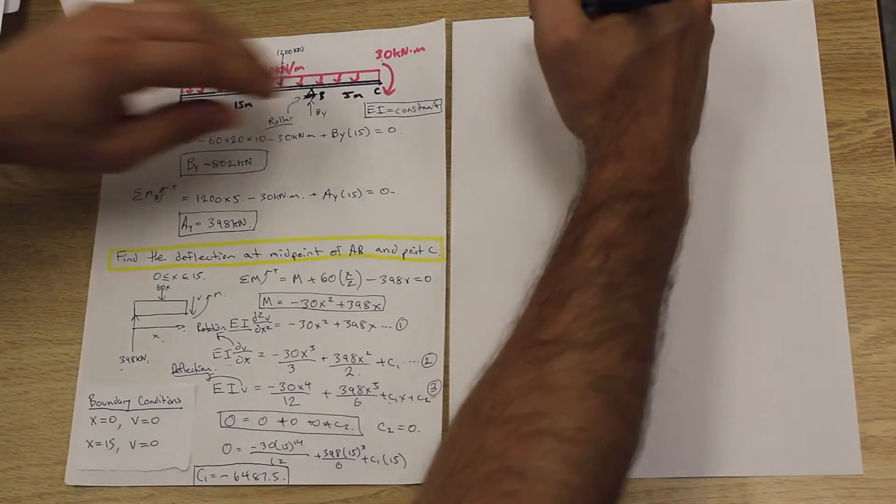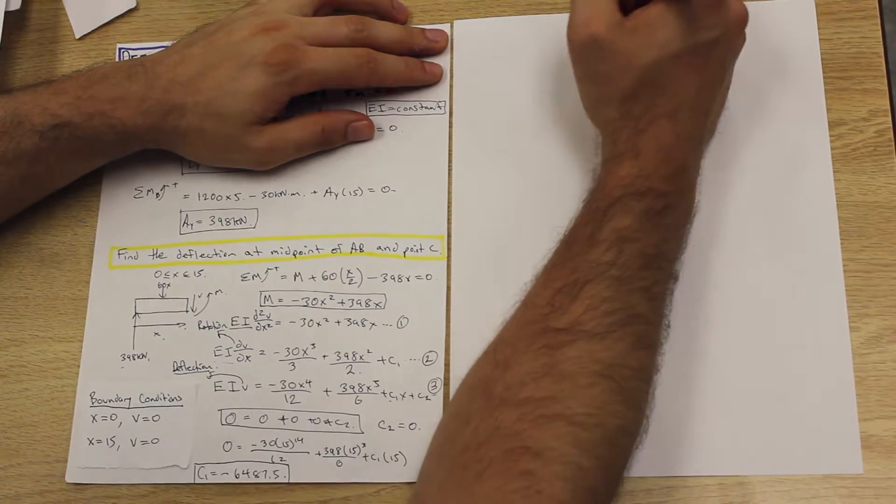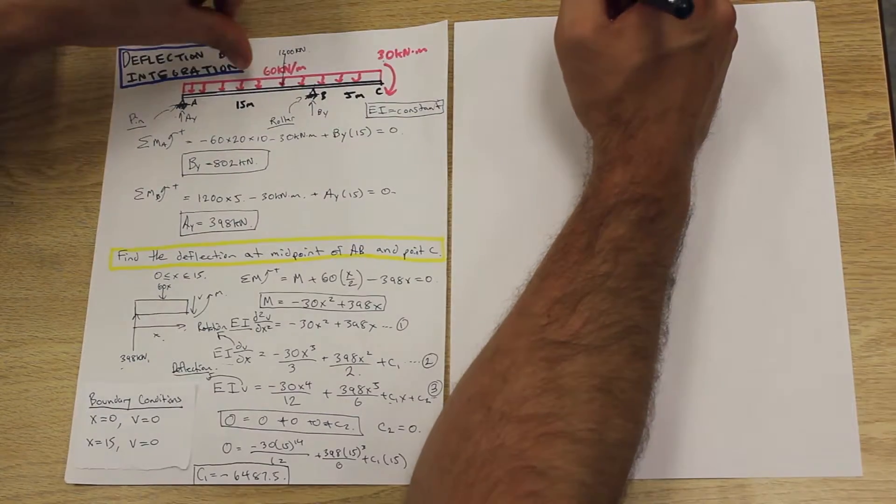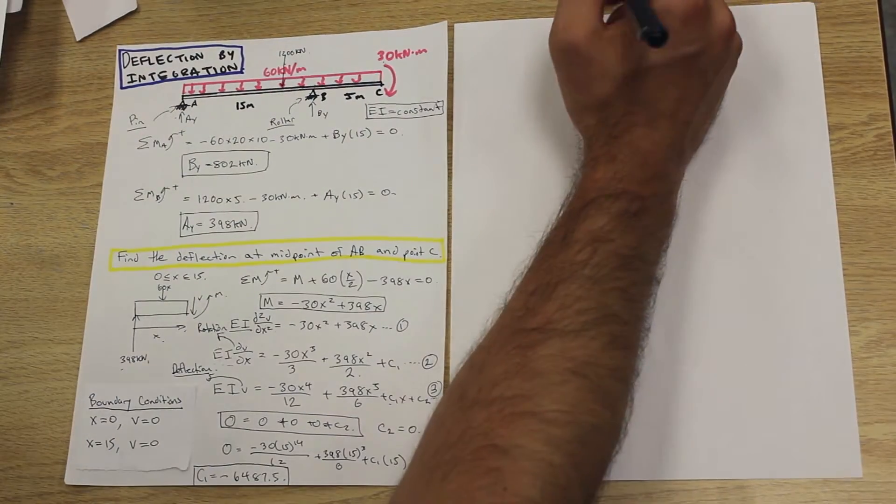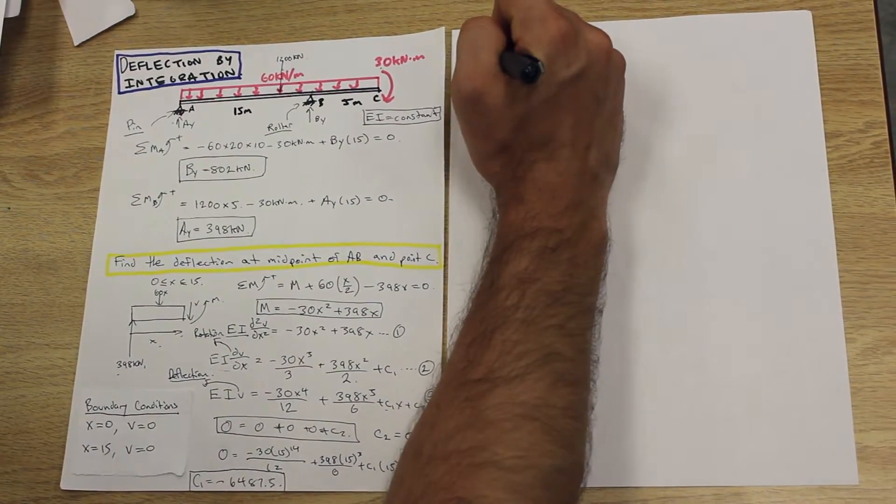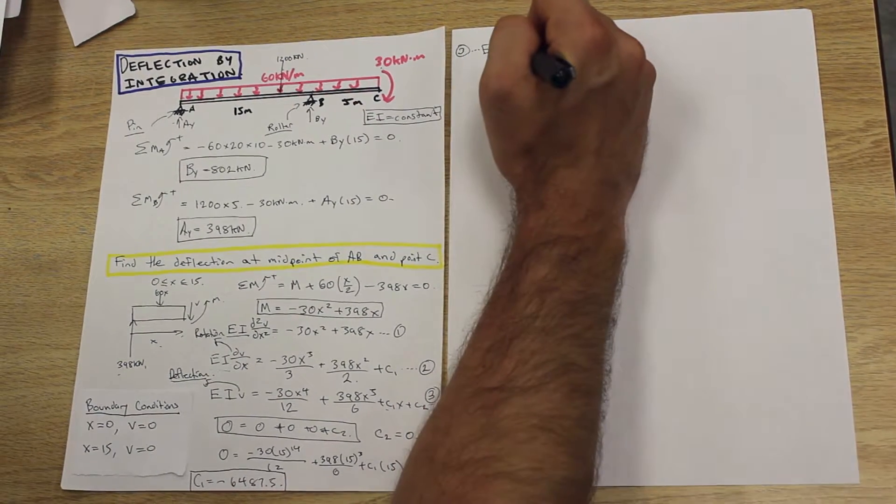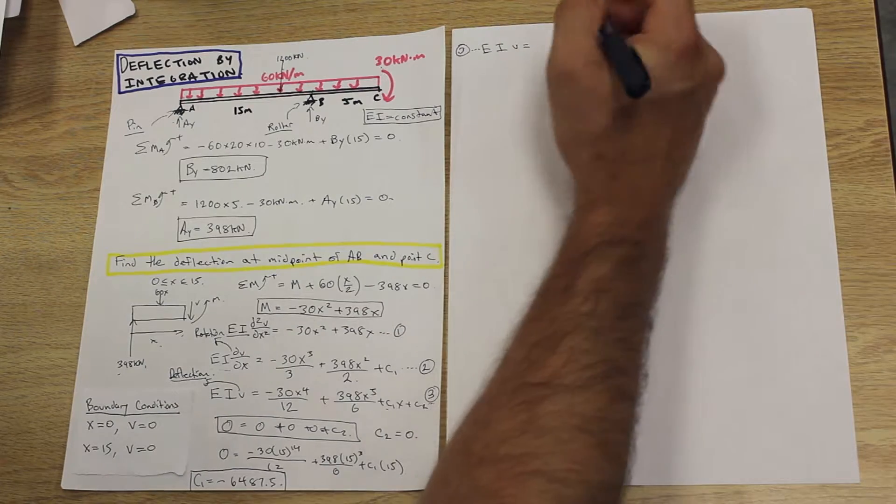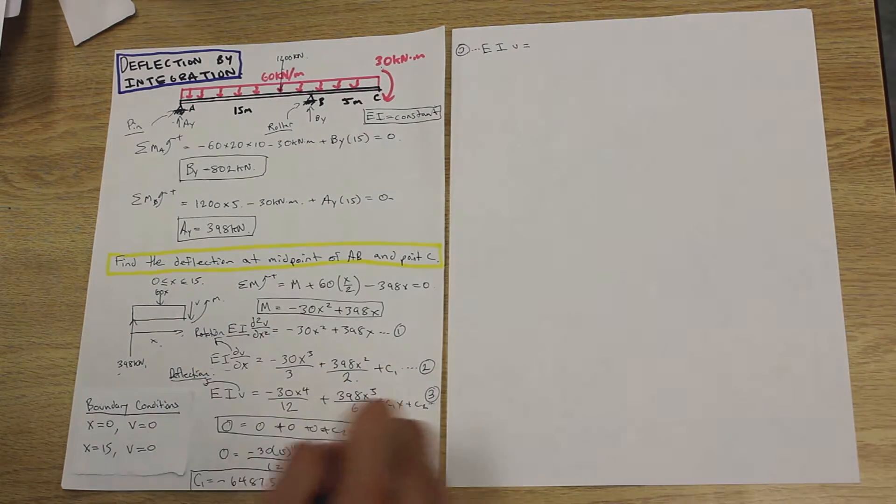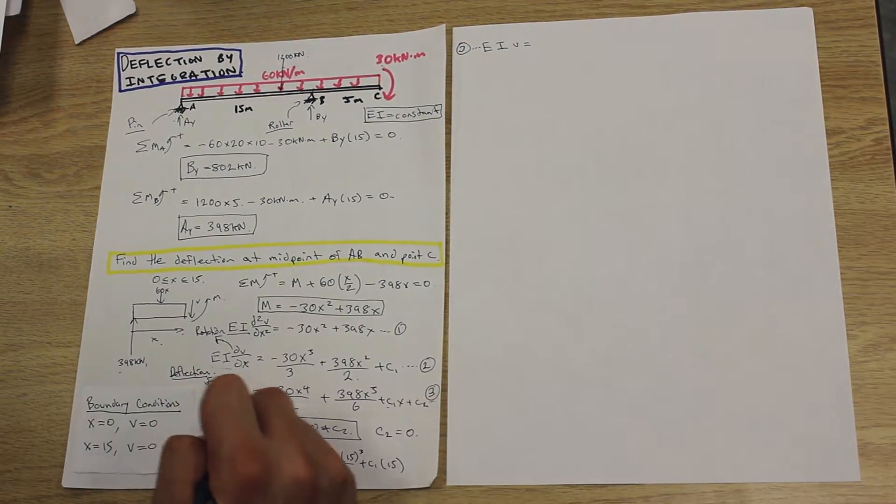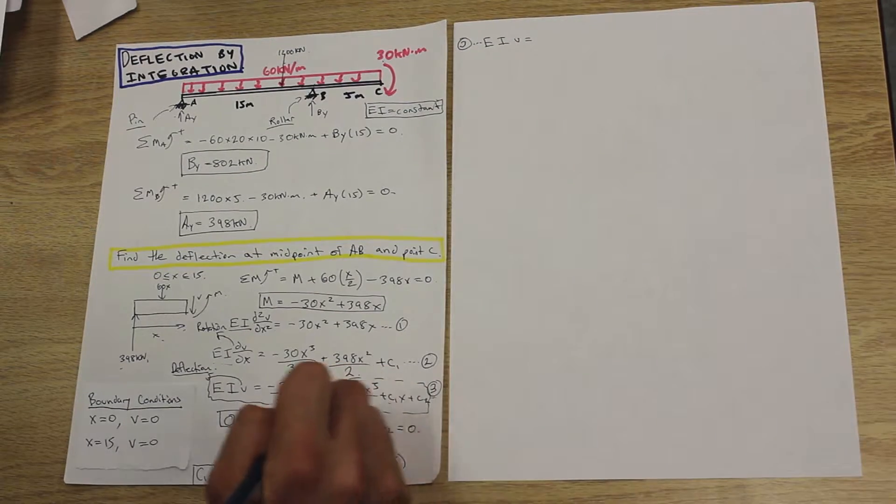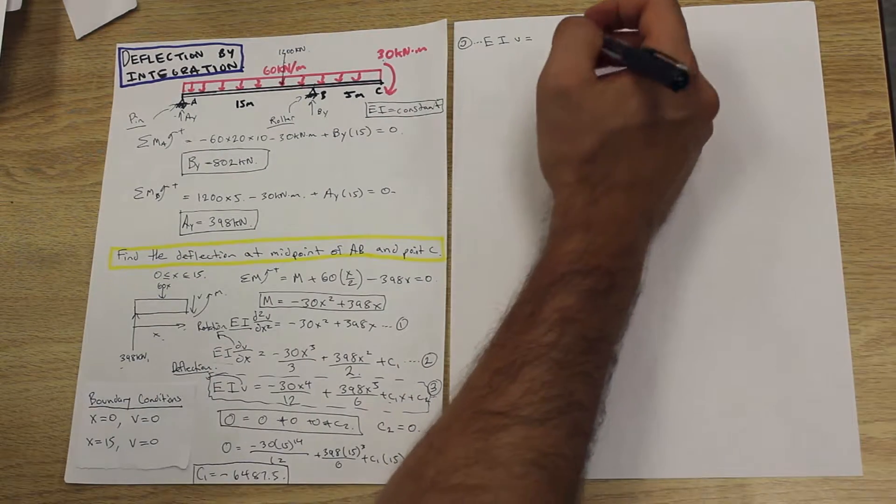So now what we can do is come over to this side and solve for the deflection at the midpoint. So let's do that. If we write down our third equation, V, and I'm just taking that from here. So I'm just gonna make a box around that just so we don't get confused.